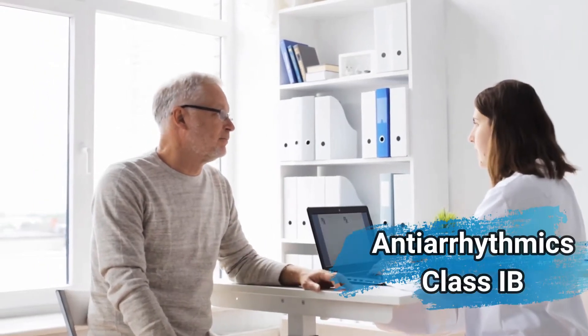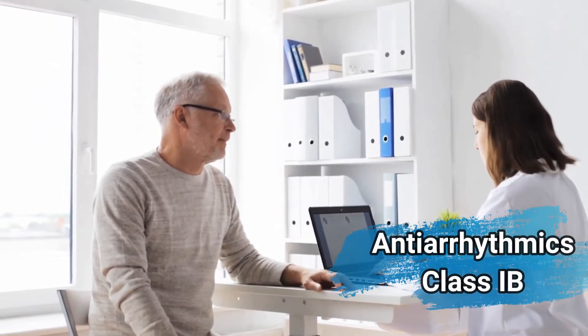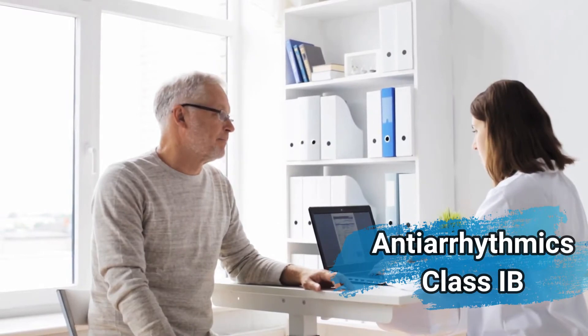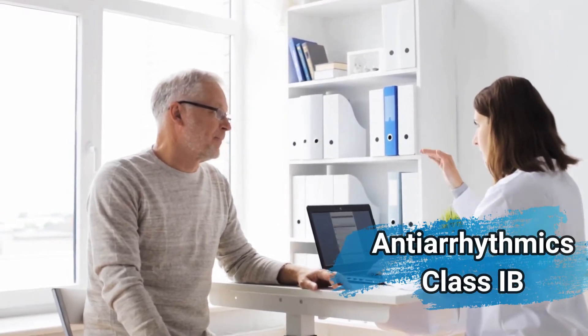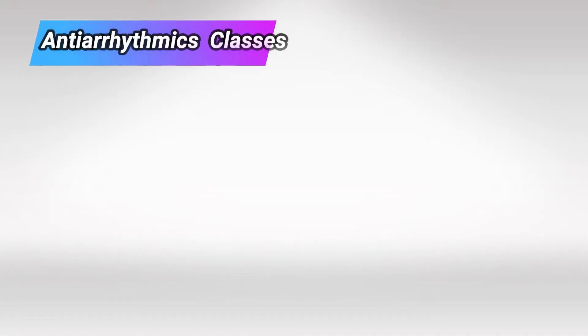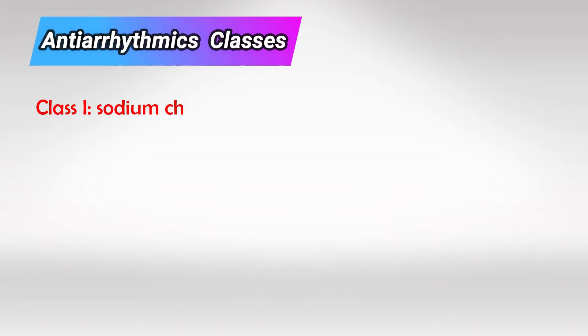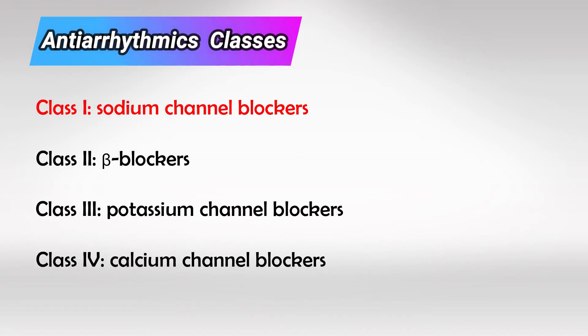Welcome back. Let's talk about the antiarrhythmic drug class 1b. As we said before, we have four main classes of antiarrhythmic drugs: class 1, 2, 3, and 4. Class 1 is subdivided into A, B, and C, and in this video we'll talk about class 1b.